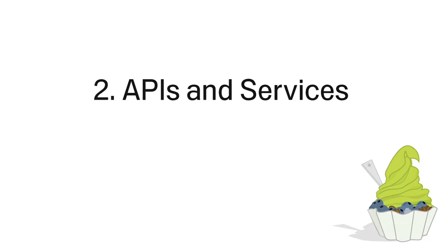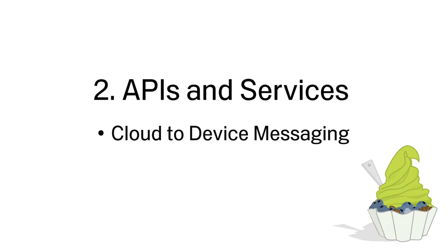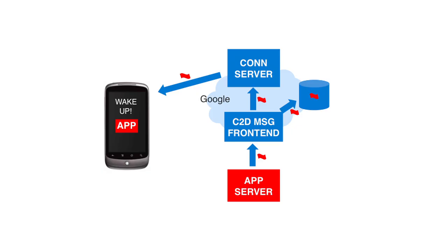Developers can use Android Cloud to Device Messaging to easily enable alerts, send to phone, and two-way sync functionality for their apps. With this API, an app server can send authenticated messages to the Google server, which would push the message to the app on a user's device.